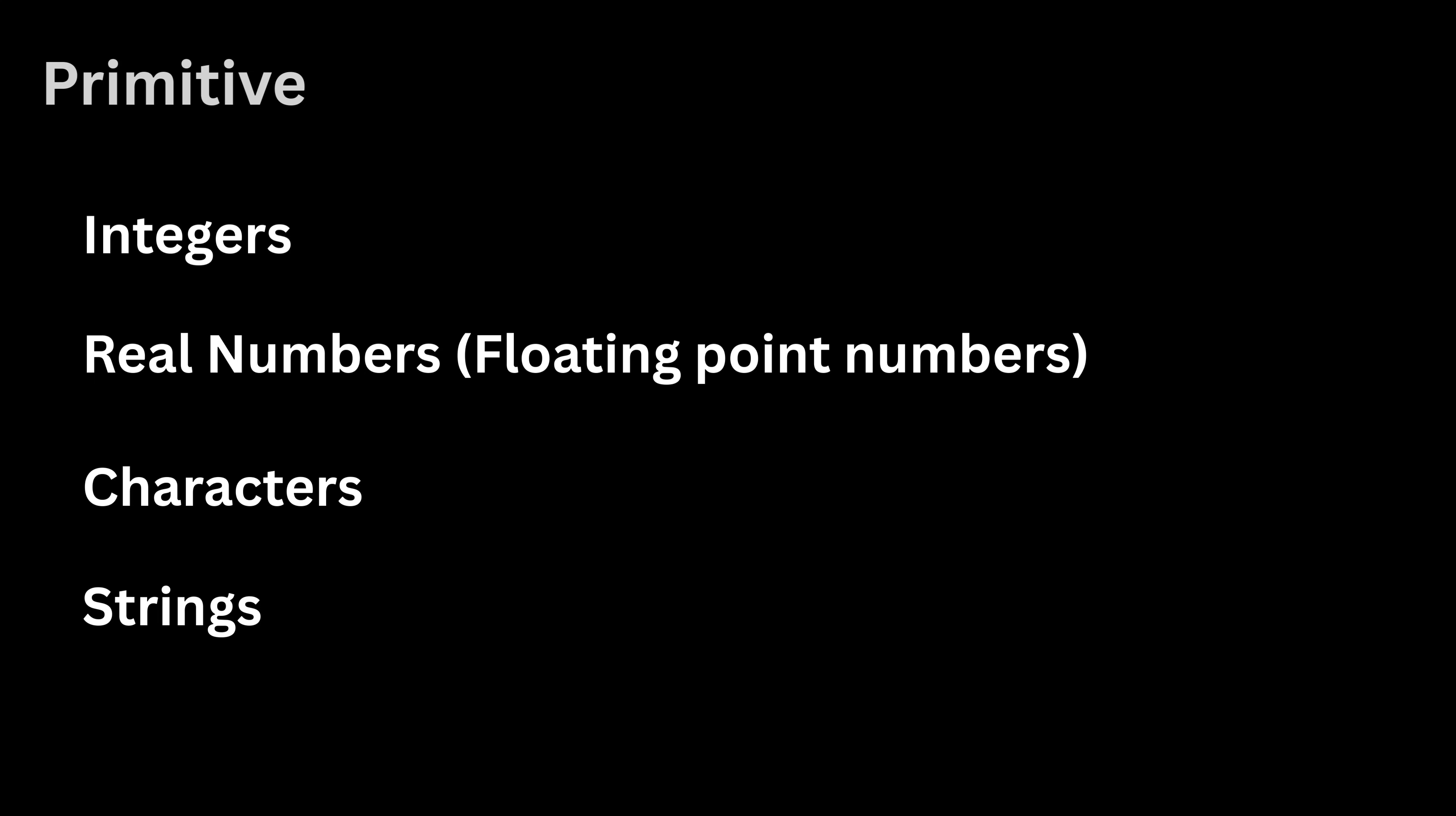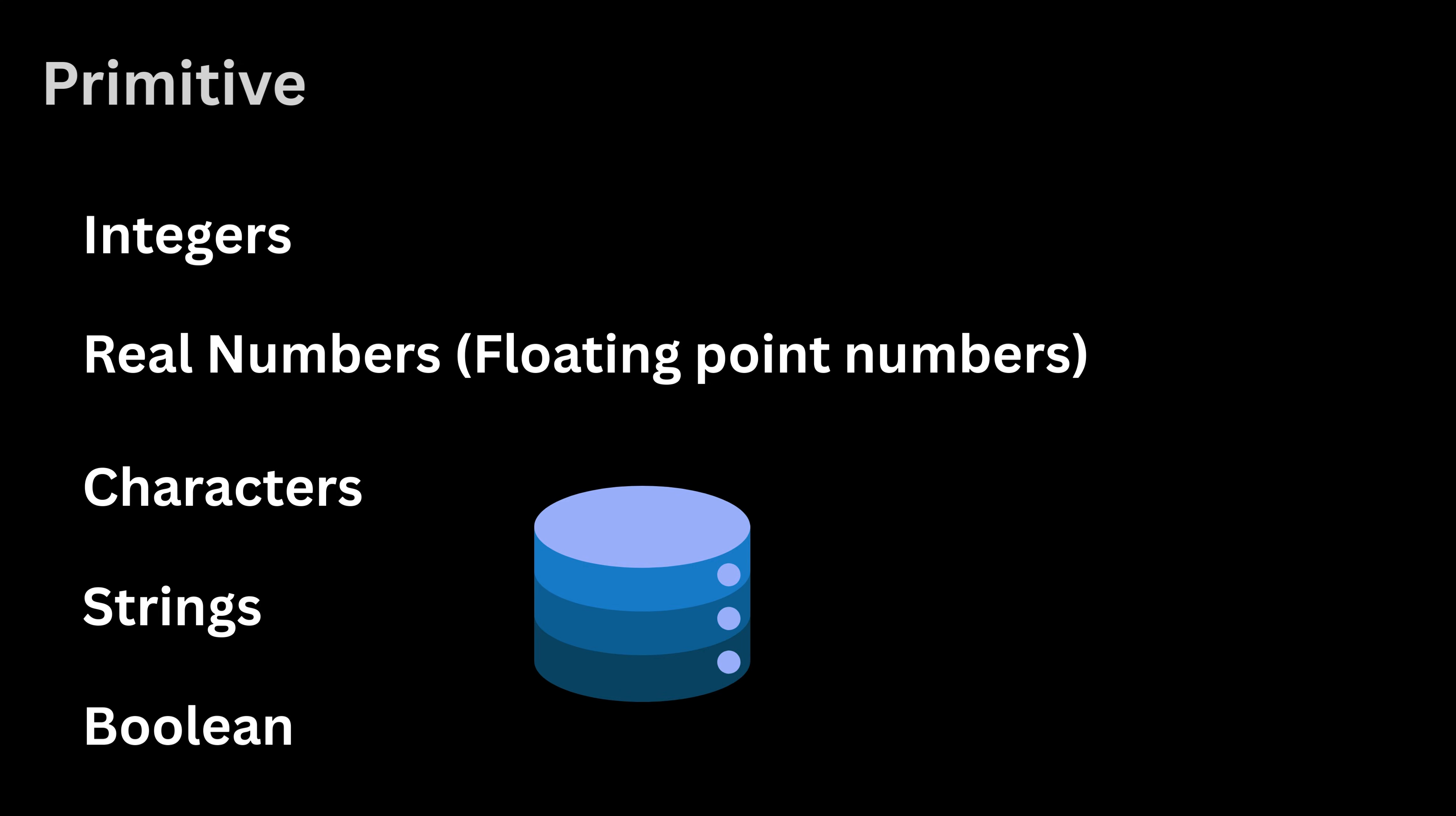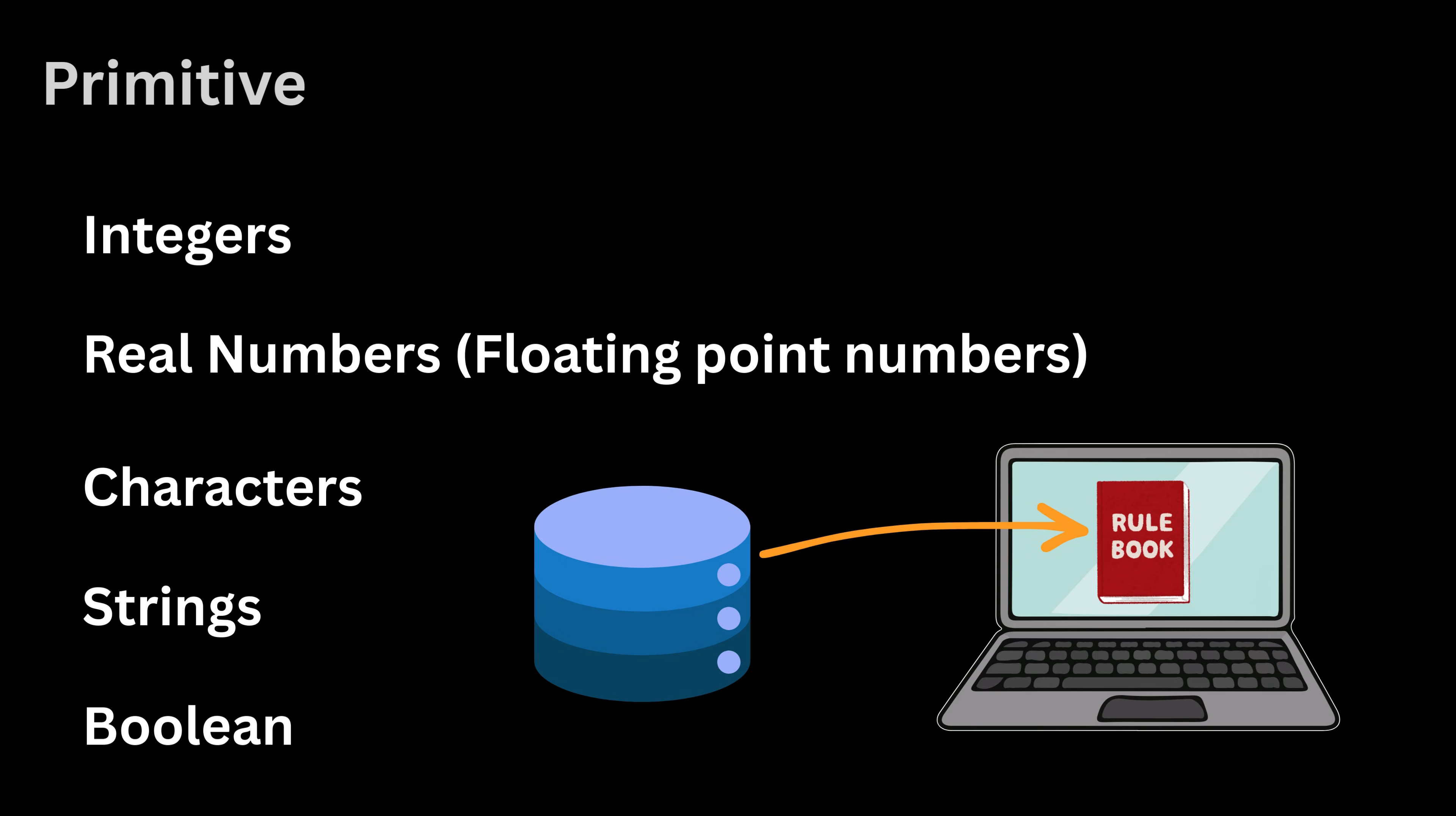Primitive data types include integer numbers, real numbers which are also called floating point numbers, characters, strings, and boolean values. When we choose a data type, we are basically giving the computer a strict rulebook about how that particular piece of data behaves.